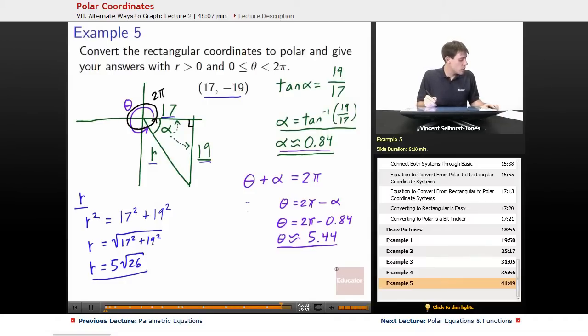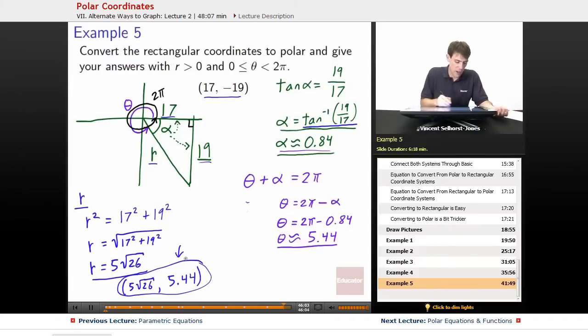So that means we could plot the point as being 5 root 26, our r value of 5 root 26 and comma 5.44. That's what we wind up figuring out as our approximate value. If we wanted it precisely, we could leave it as 2 pi minus tan inverse of 19 over 17, but we'll probably wind up being okay with just having this approximate value of 5.44.